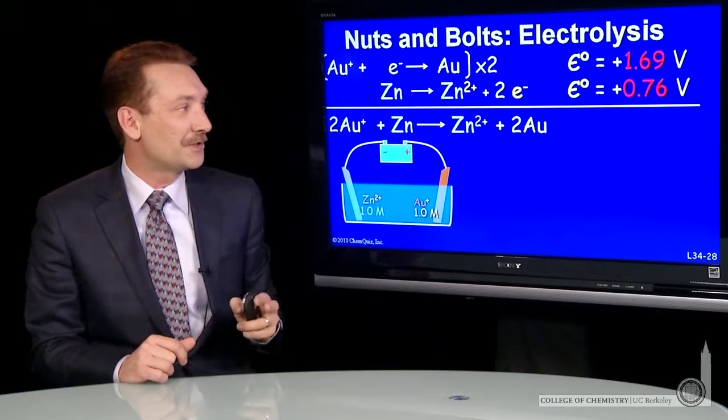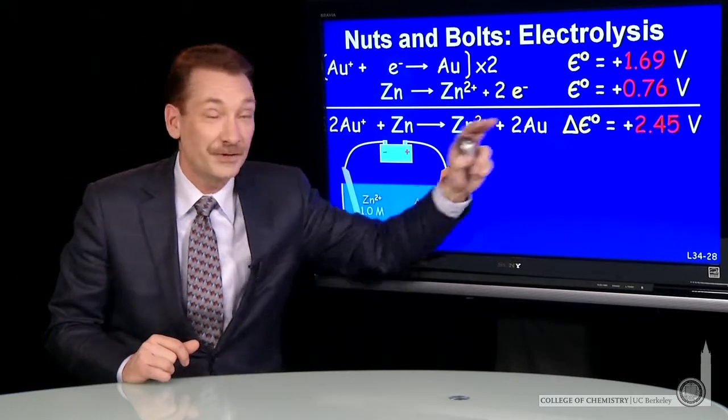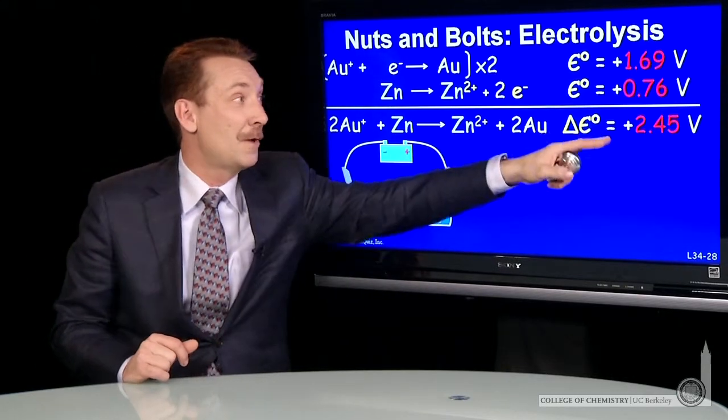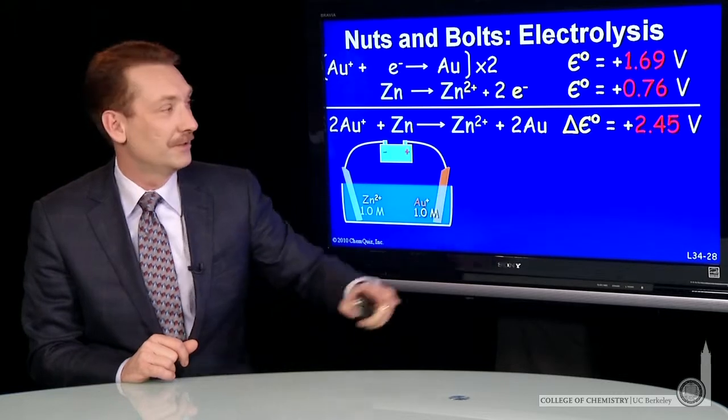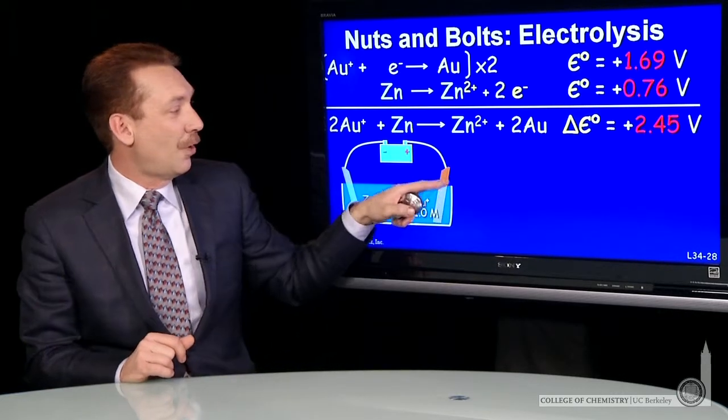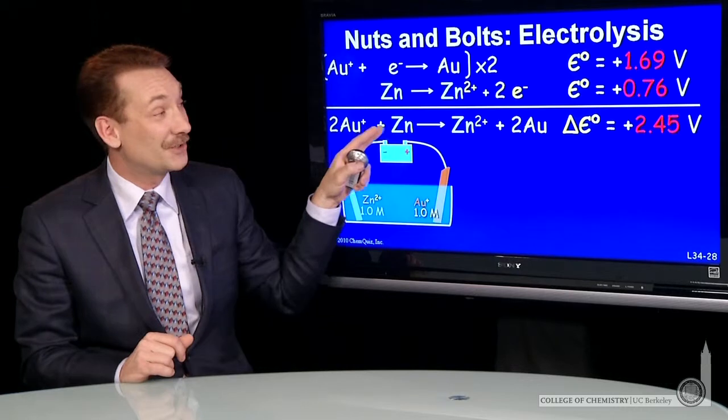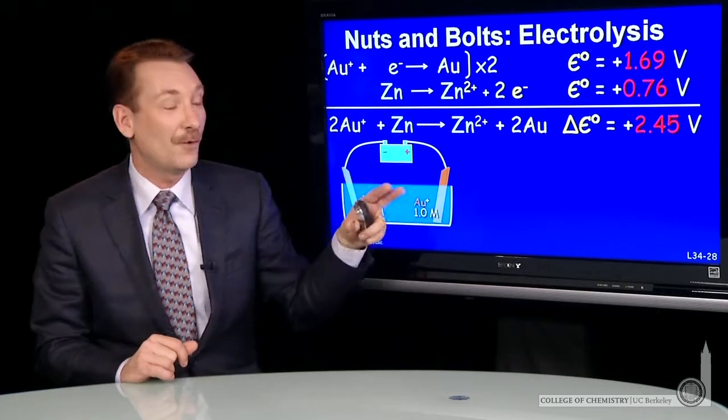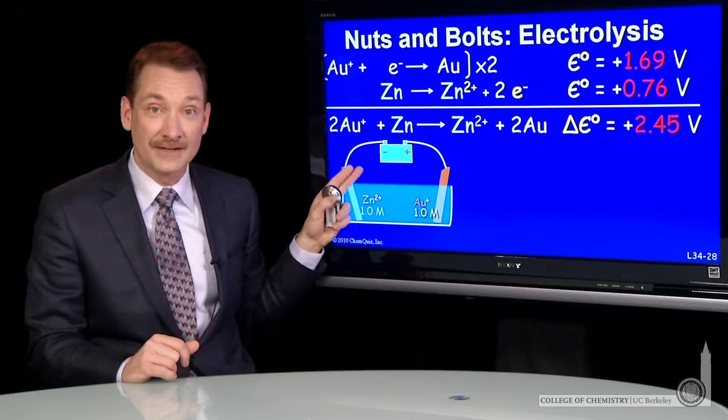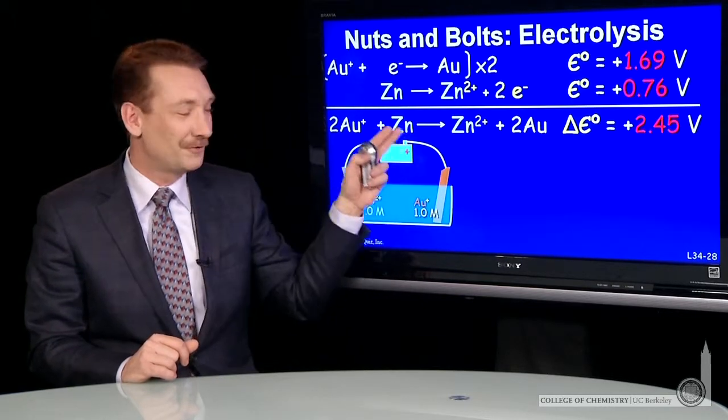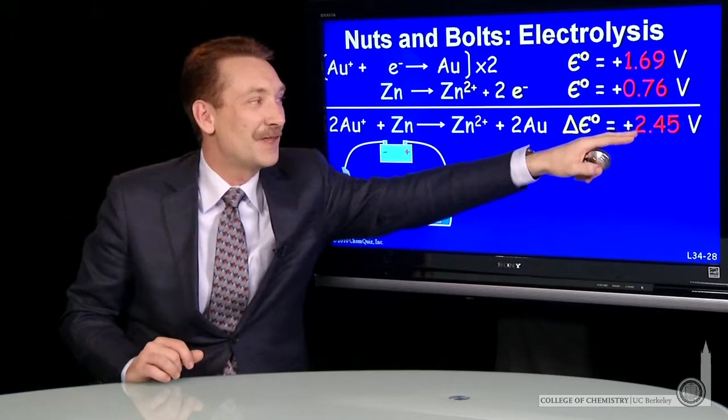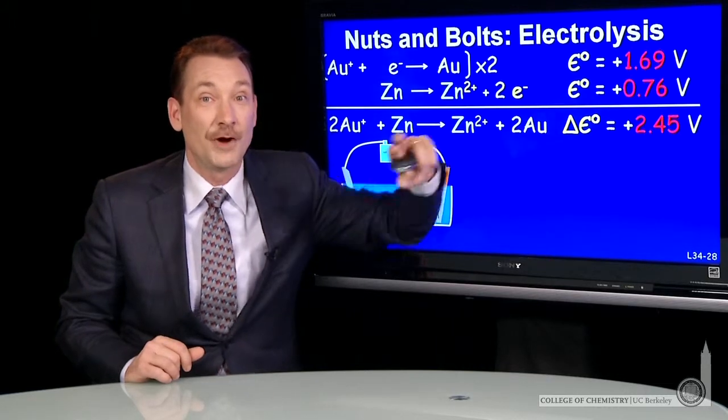So the overall voltage of the standard galvanic direction would be 2.54. I need to overcome that to go in the electrolytic direction. So the minimum extra voltage I need is something greater than 2.45.